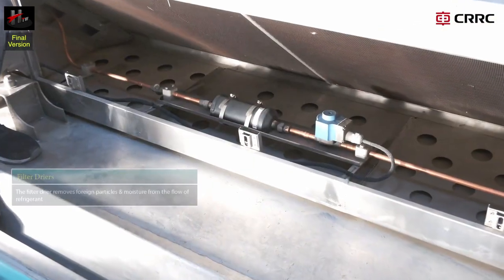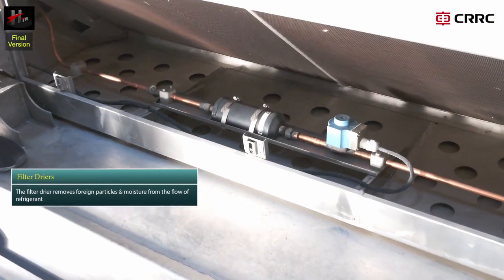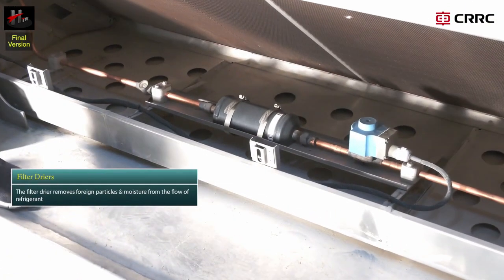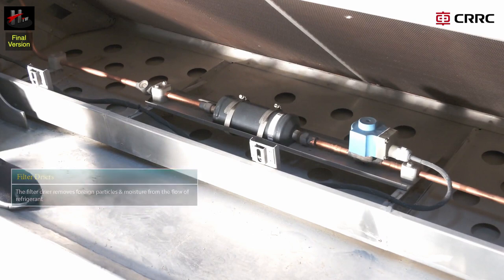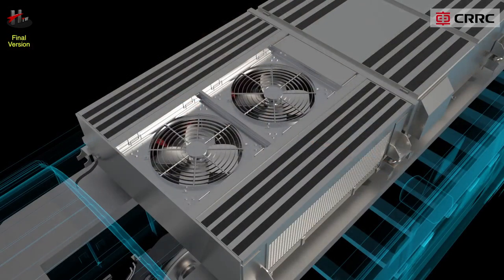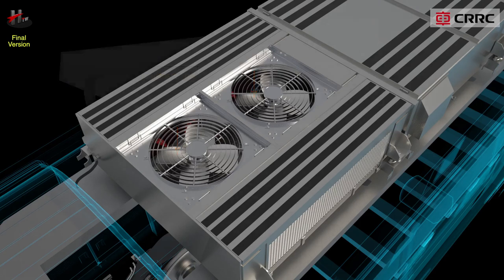The filter dryer removes foreign particles and moisture from the flow of the refrigerant. Condenser fans facilitate the transfer of heat from the condenser coil to the ambient atmosphere.